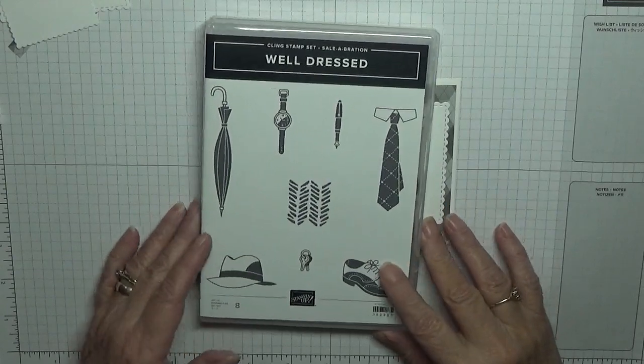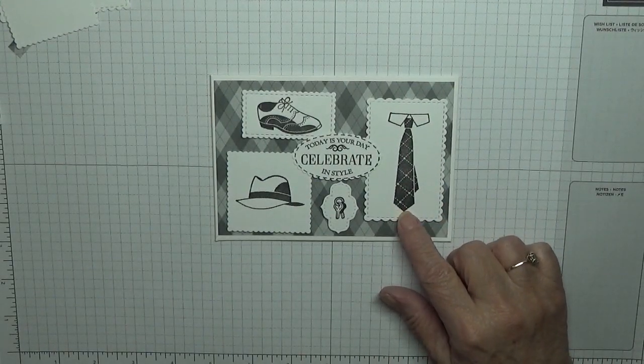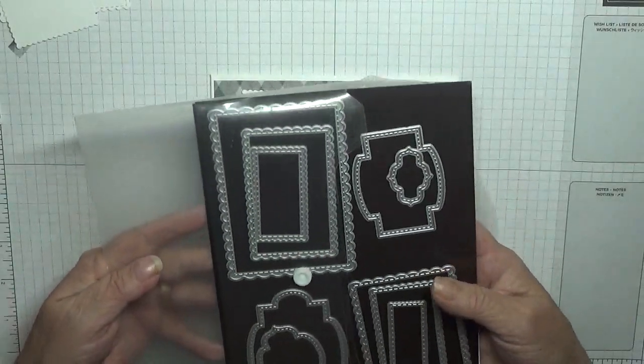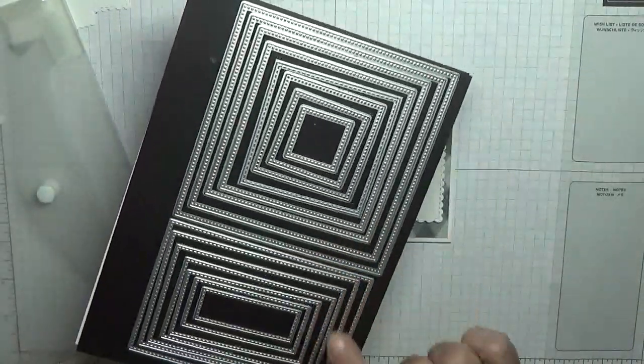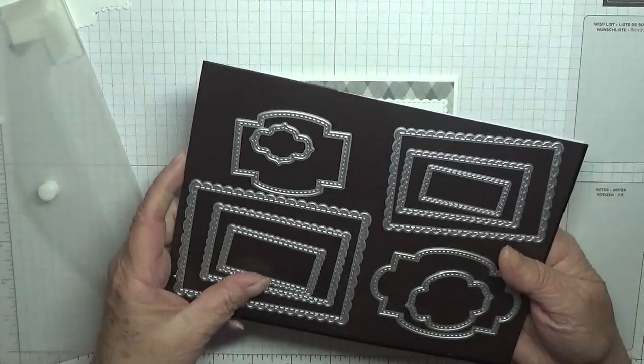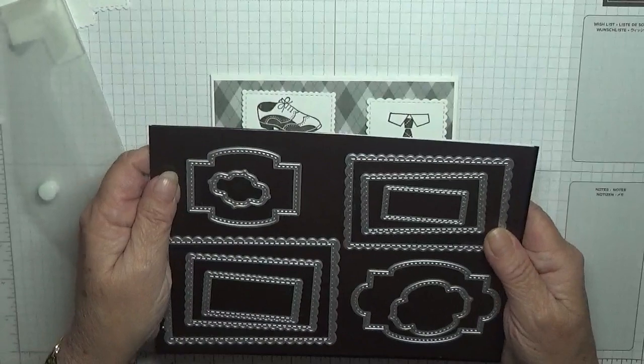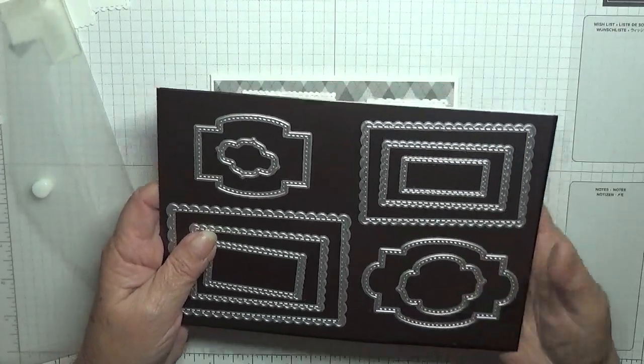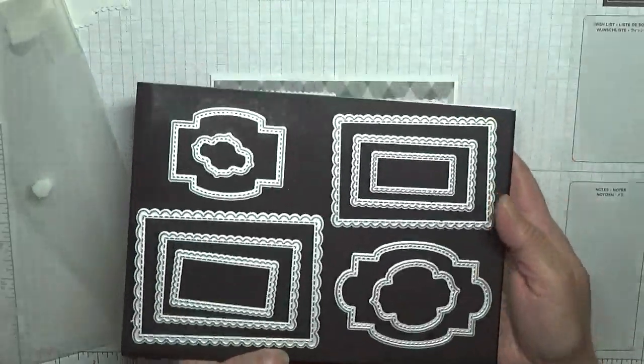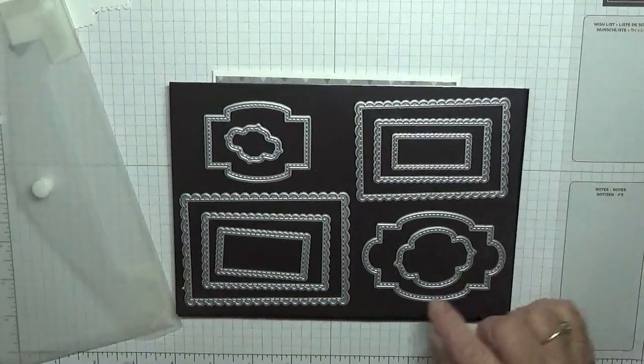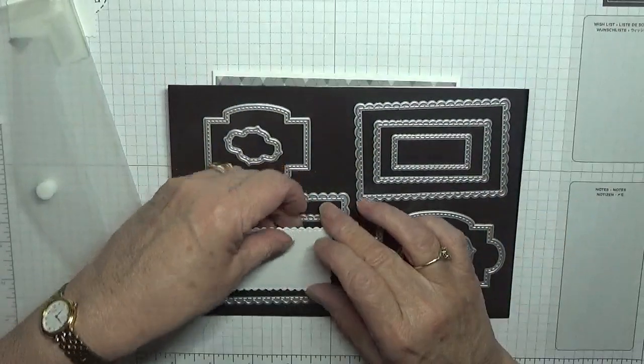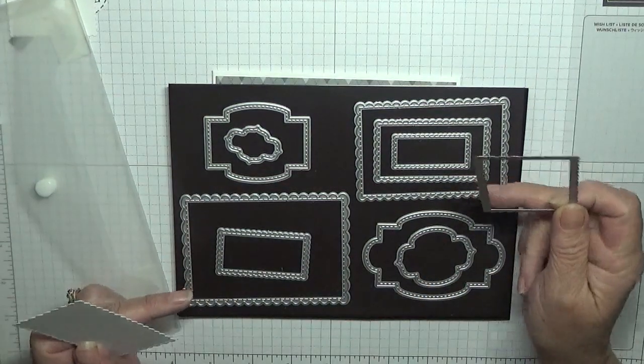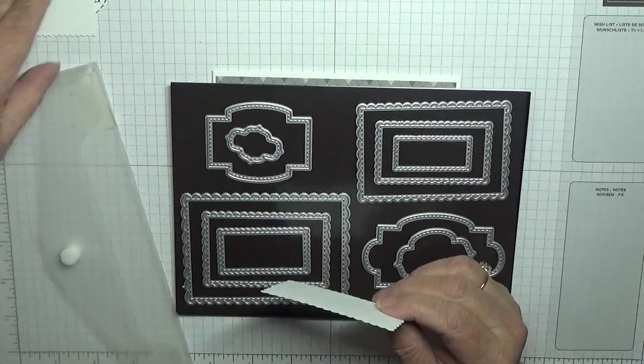For the card I've also used a new die set, Stitch So Sweetly die set. I have to be careful where I pull these out because I have had to double up on my wallets, because my box will only keep a hundred wallets in it. So I've started to double up on my dies in them, as I don't want too many wallets.